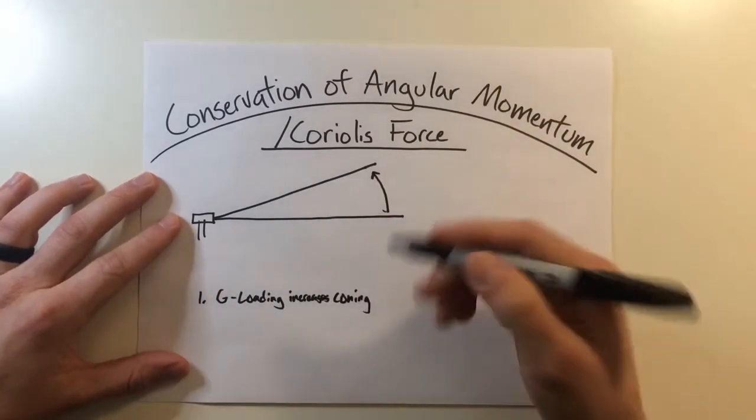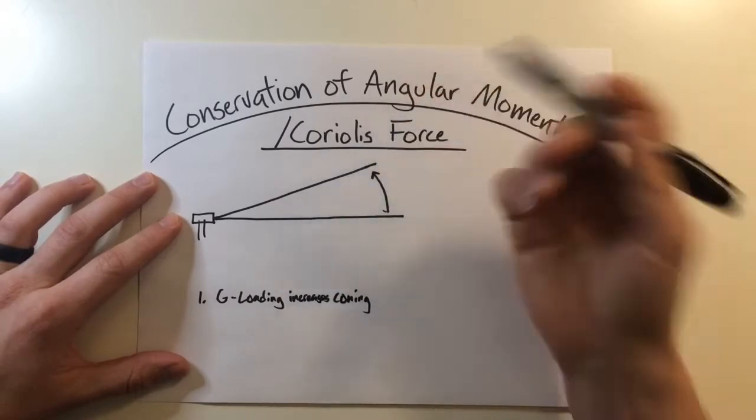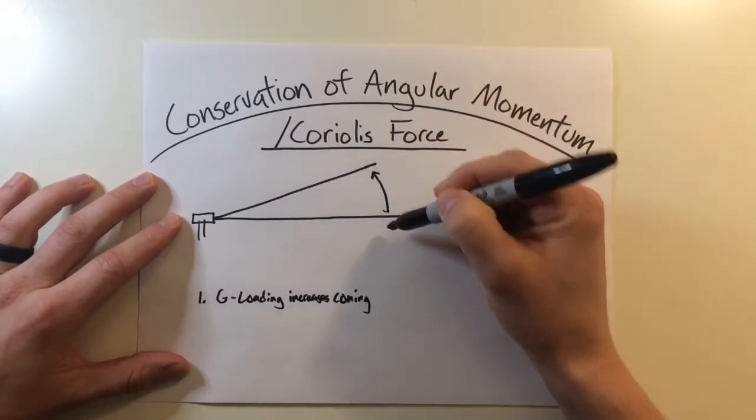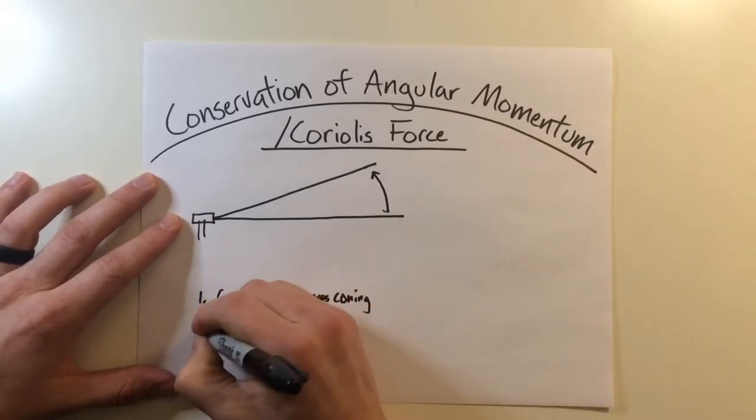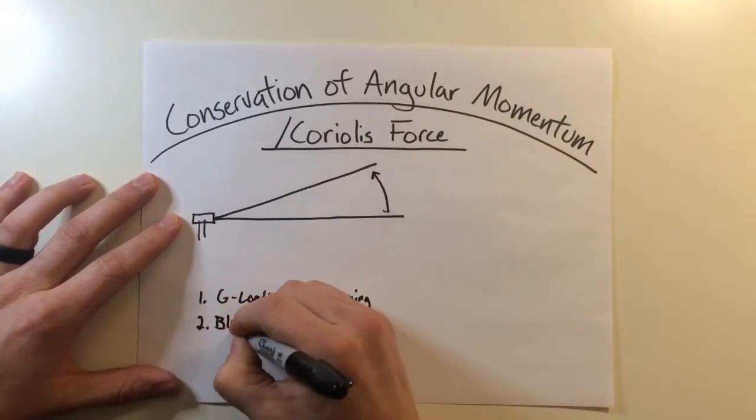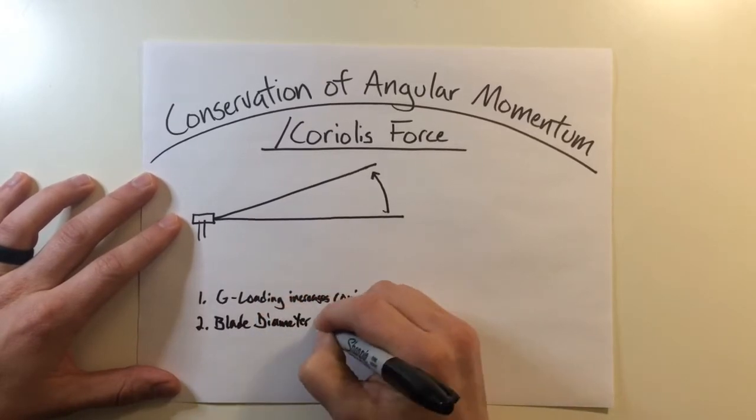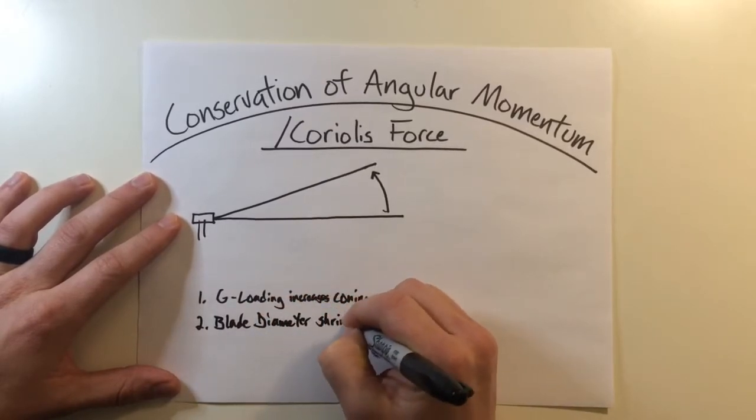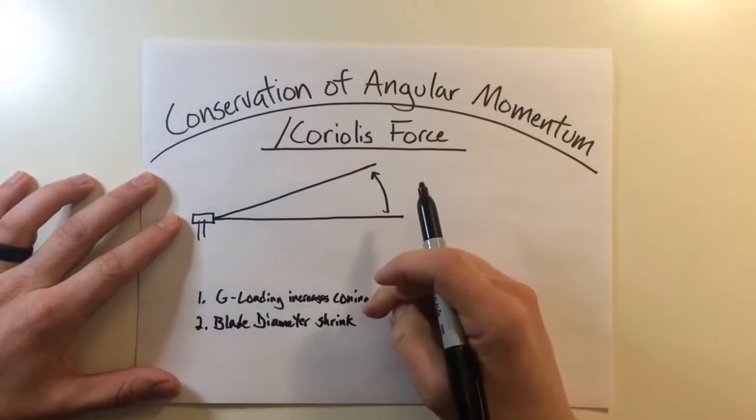Now the rotor begins to cone when the g-forces increase and vice versa. So as you shed some of those g-forces, it wants to reduce some of that coning angle. Now, as this is going on, the blade diameter is going to shrink.